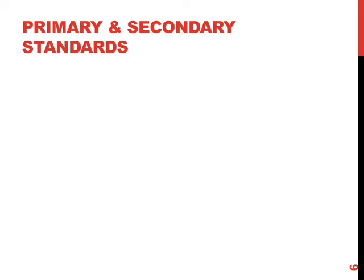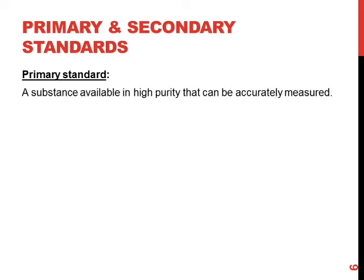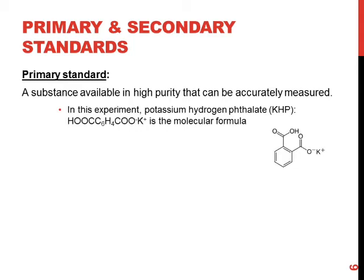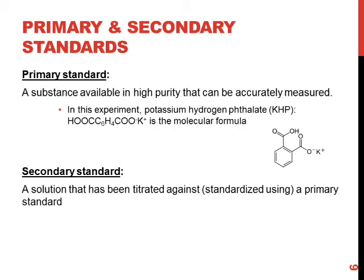In this experiment, you will be dealing with primary and secondary standards. A primary standard is a substance available in high purity that can be accurately measured; all of the relevant properties of this prepared solution are known. In this experiment, KHP, or potassium hydrogen phthalate, is the primary standard. A secondary standard is a solution that has been titrated against, or standardized, using the primary standard. So you will be using KHP, the primary standard, to analyze sodium hydroxide, the secondary standard.